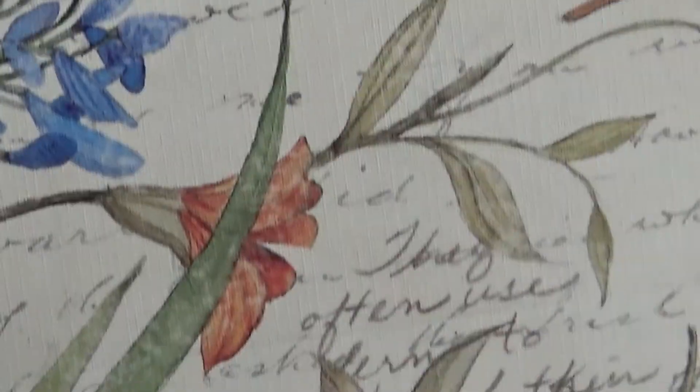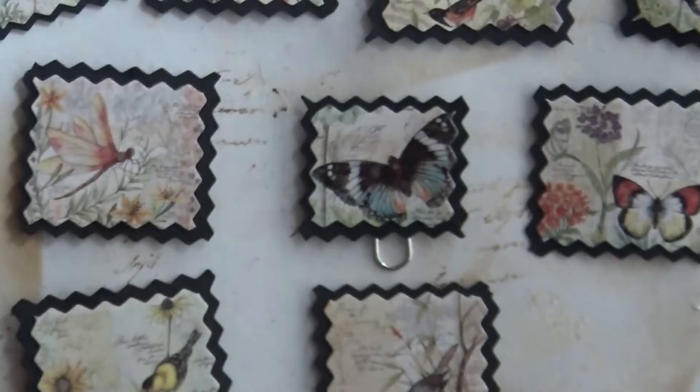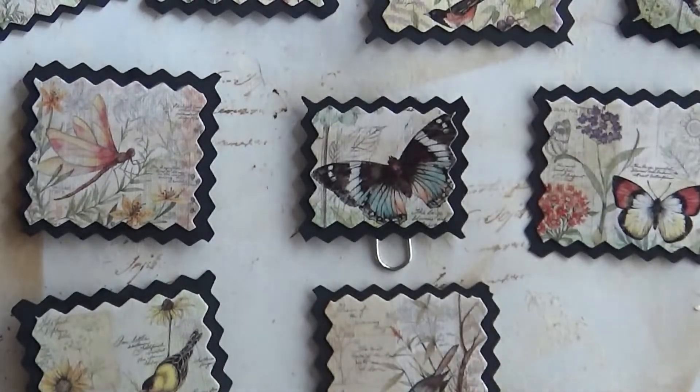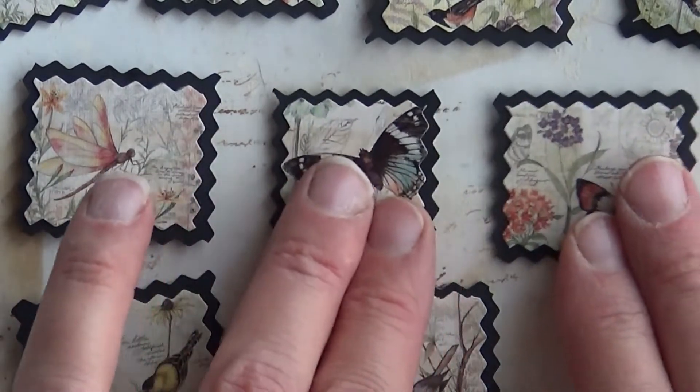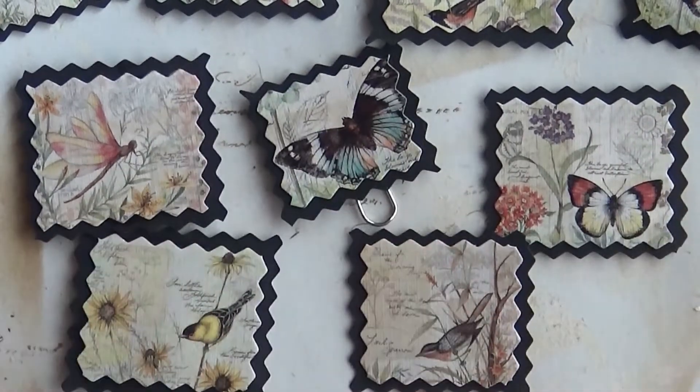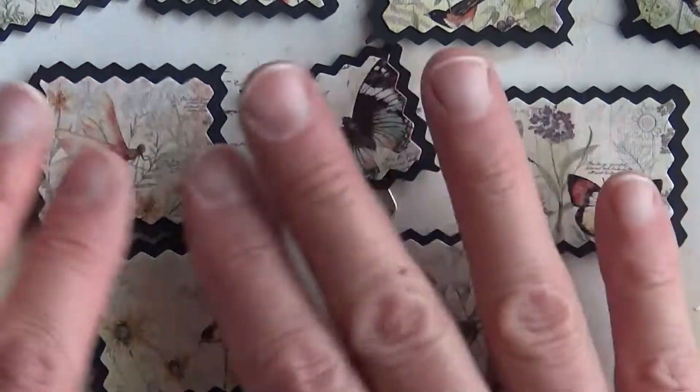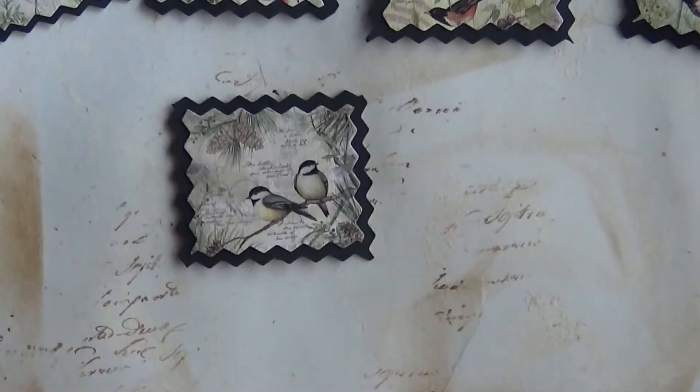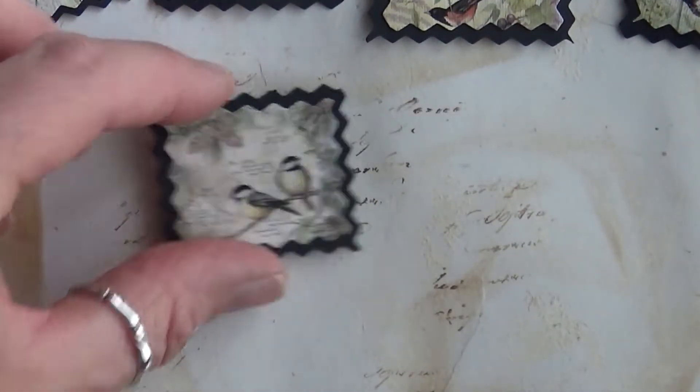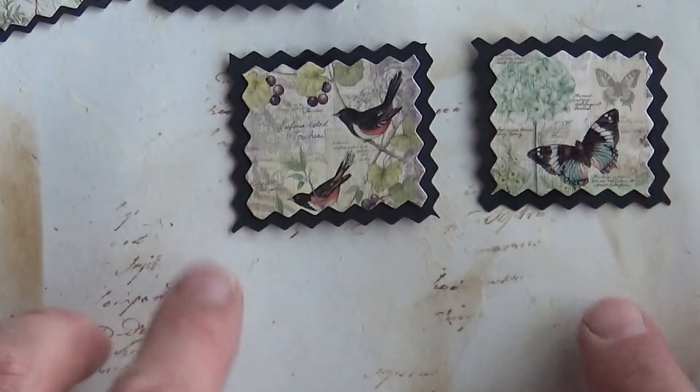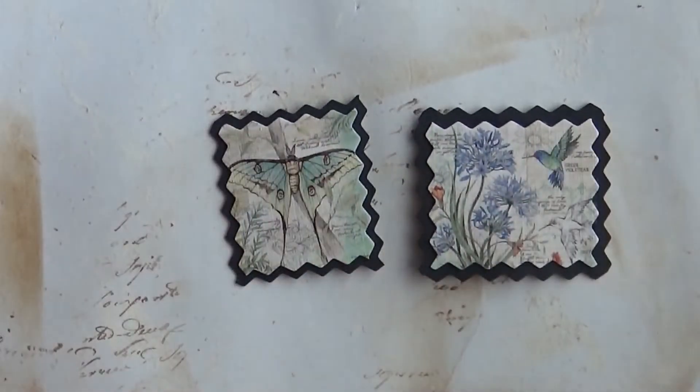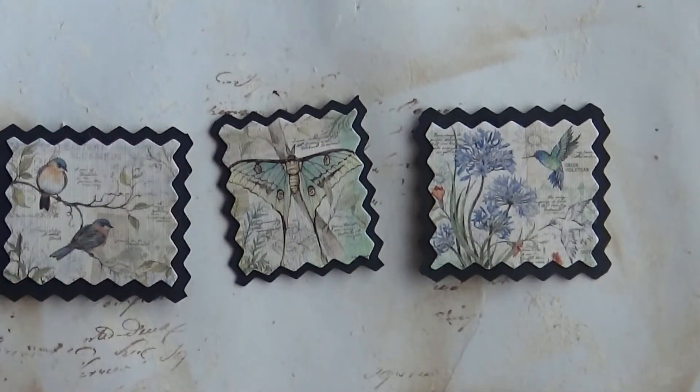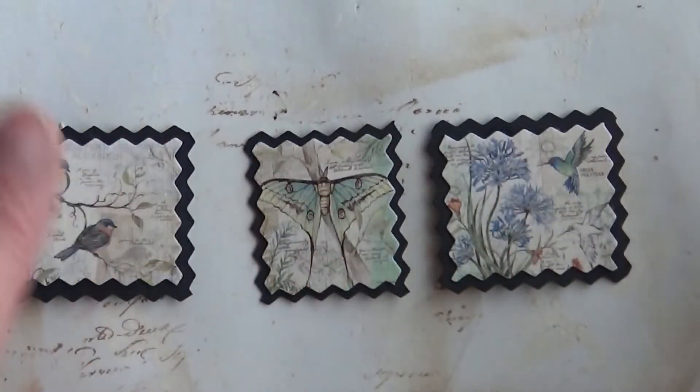I wanted to do just a little stamp style embellishments and I really liked how the black border came out on these. I think that came out really fun and neat, so there's those, and I cut these off the back of the package.